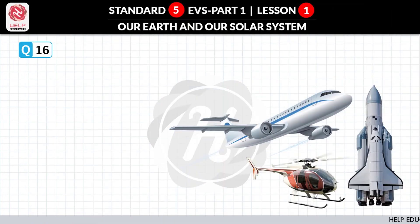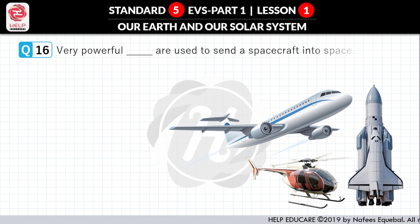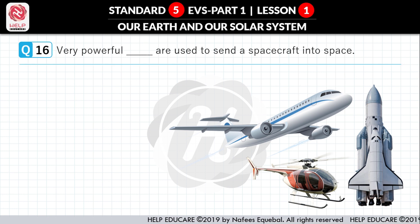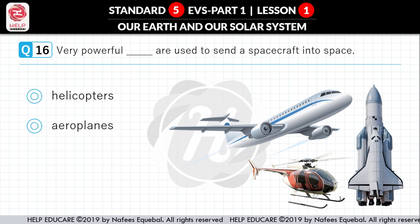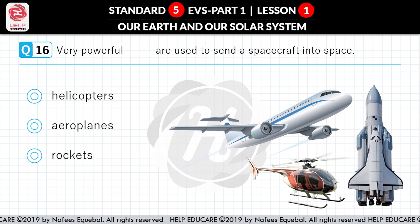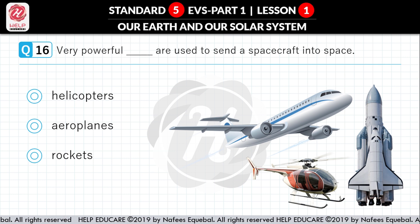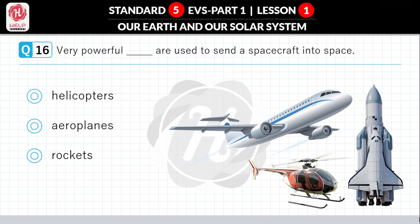Question No. 16: What is used to send a spacecraft into space? First option: Helicopters. Second option: Aeroplanes. Third option: Rockets. Correct answer is Rockets.